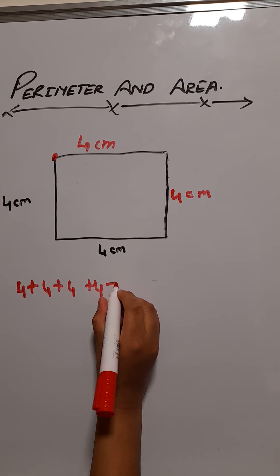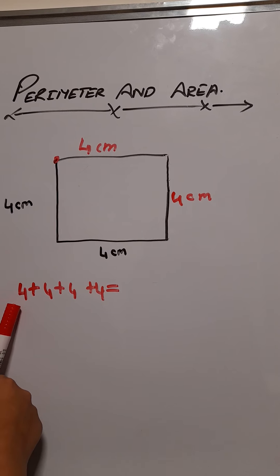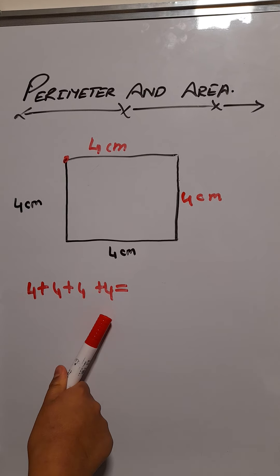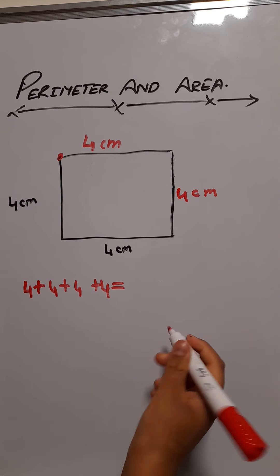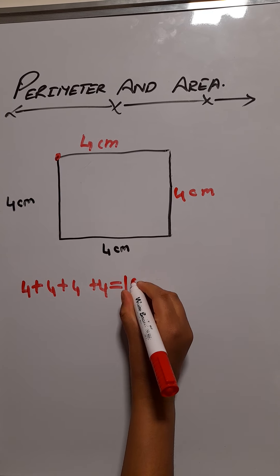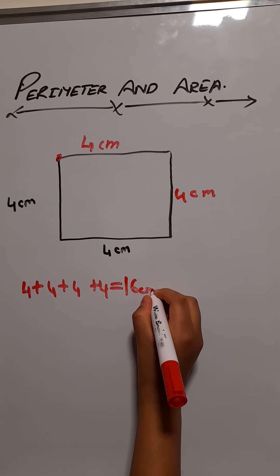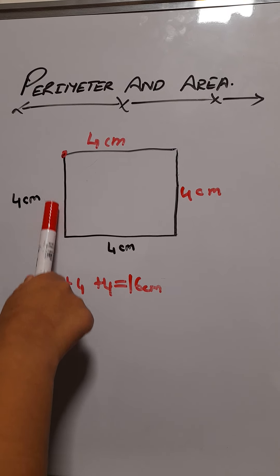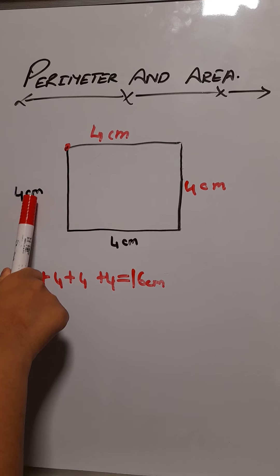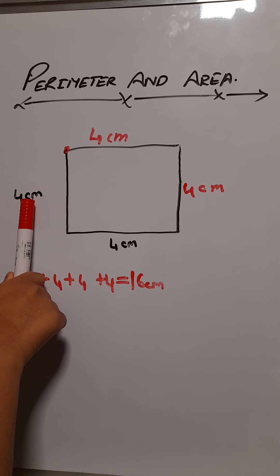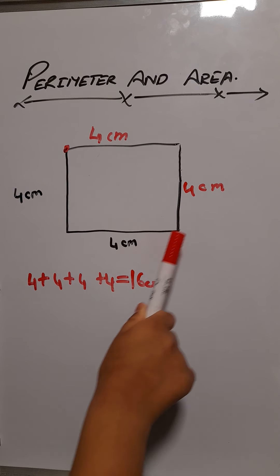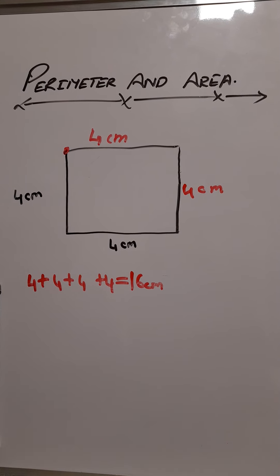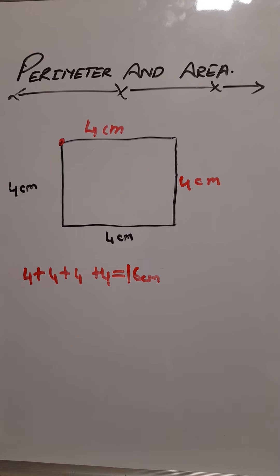Now we have to find the answer. The answer is 4 plus 4 which gives you 8, then 8 plus 4 which gives you 12, and 12 plus 4 which is 16cm. With our units of measurement, we also have to put the way we are doing it. As you see, every side has centimeters. Now we will go onto the area of this shape.